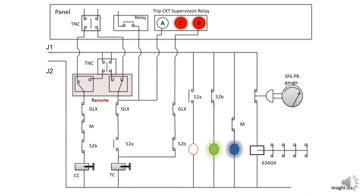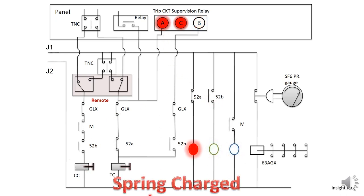Right now we have the breaker in the off mode with the local and remote switch on remote mode, so we are going to operate the circuit breaker from the control panel through the TNC switch. Once the TNC switch is operated, the closing coil is operated, due to which all the contacts will change and we have the post-close supervision indication. The spring is then once again charged and we get the spring charge indication back.